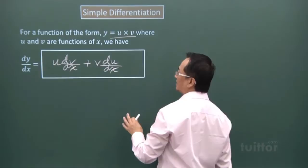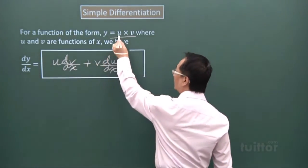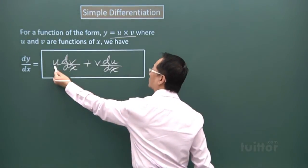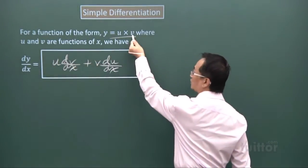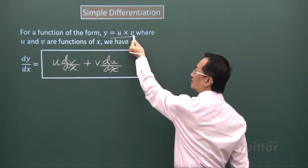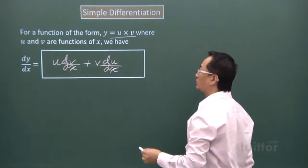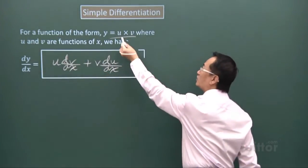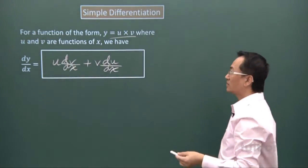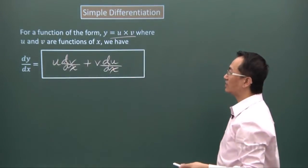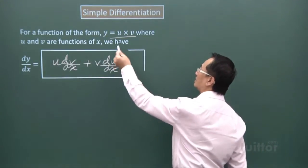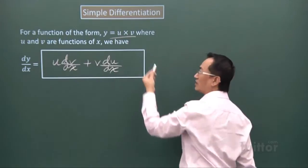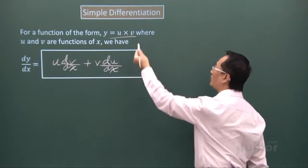What this really means is when you look at the product here, first you may just write the expression of u here but you differentiate the expression of v, plus you will then keep the expression of v but you differentiate the expression of u. So a simple way to remember this rule is that you will take turns to differentiate the functions here - maybe keep u first, differentiate the v, then keep v, differentiate the u.